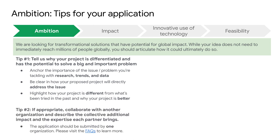The second tip under ambition is to collaborate with other organizations if it's appropriate. We believe partnerships may be helpful for achieving large-scale impact in the climate space. We know that this may not be practical for all solutions, but we highly encourage you to consider it if you see an opportunity for another organization to add to your expertise and capabilities. Please note, only one organization may be the applicant of record, but there is an opportunity in the application to specify the partners who will be critical to your work.